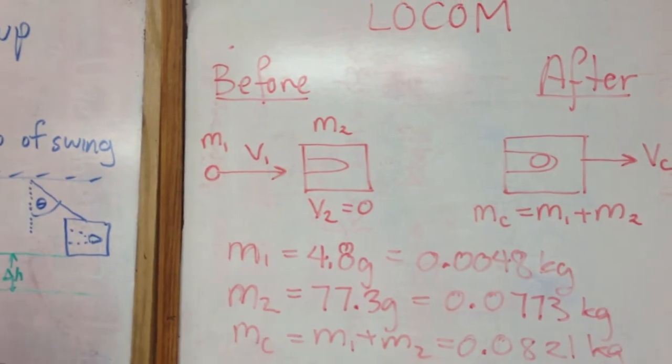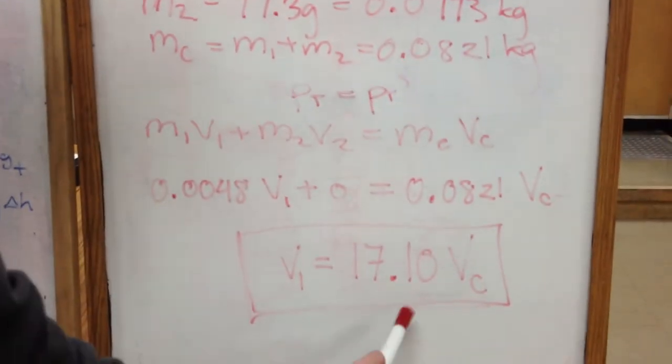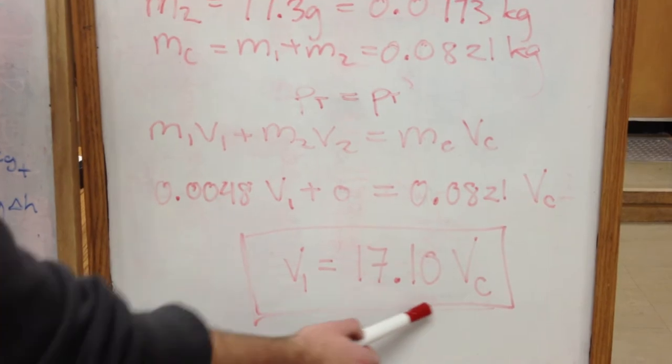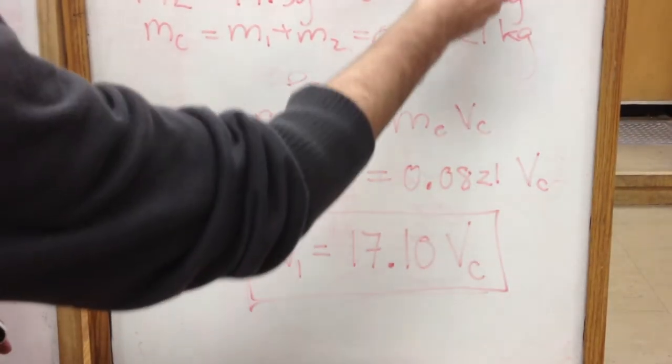So at the very end, you're left with this equation where the velocity of the bullet is 17.1 times the velocity of the combined mass.